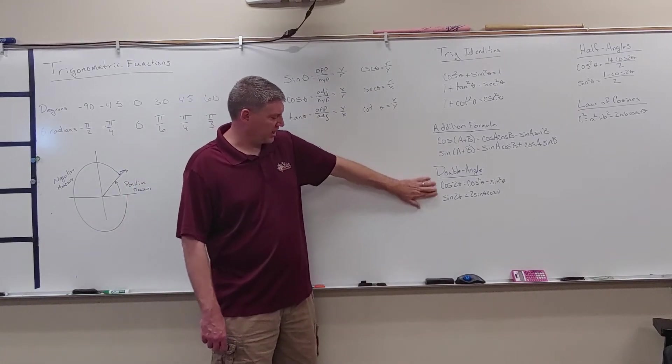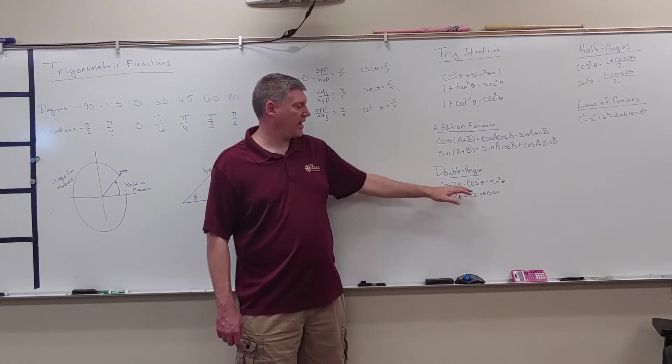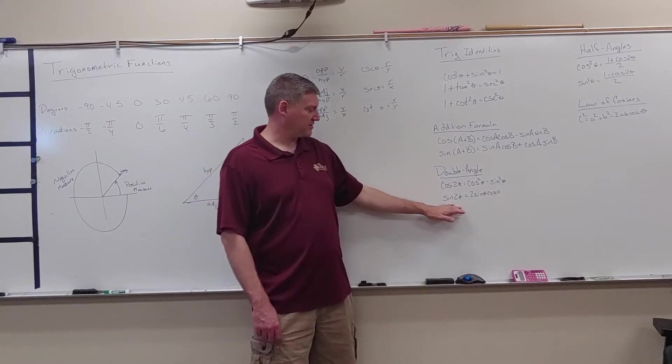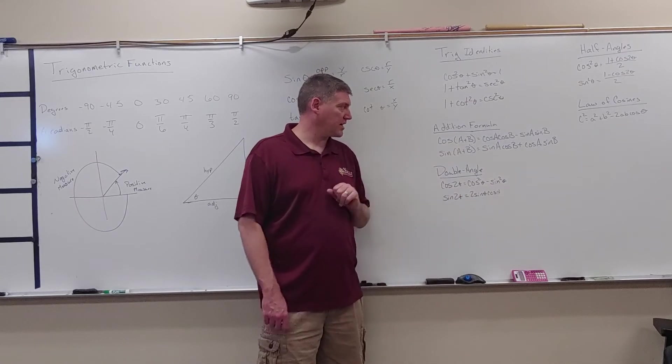Our double angle, to get rid of this double angle, cosine of 2a is equal to cosine squared minus sine squared. And if I have sine of 2a, that's going to equal 2 sine theta cosine theta.